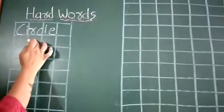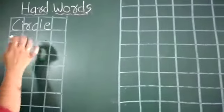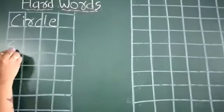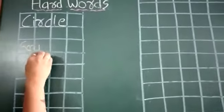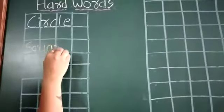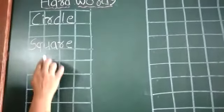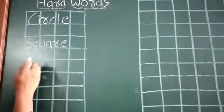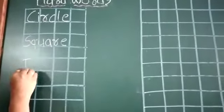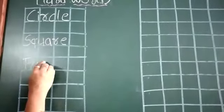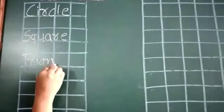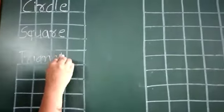Leave one box. Next. S-Q-U-A-R-E. Square. Again leave one box. Next. T-R-I-A-N-G-L-E. Triangle.